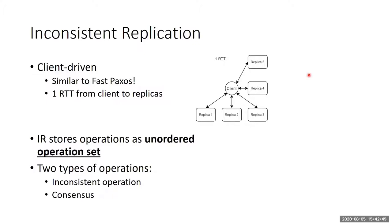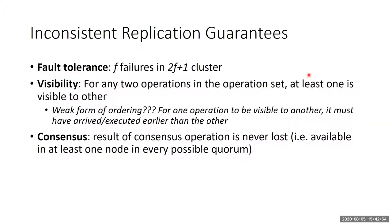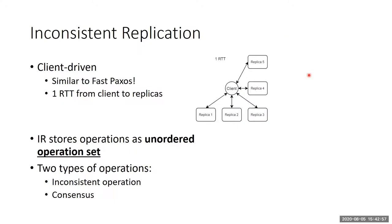For the inconsistent operation, the idea is that it's cheap and there is no consistency whatsoever between replicas. For the consensus operation, the protocol imposes more guarantees — a majority of replicas have to agree on some value. There is still a sense of agreement, but there is still no sense of ordering of operations.